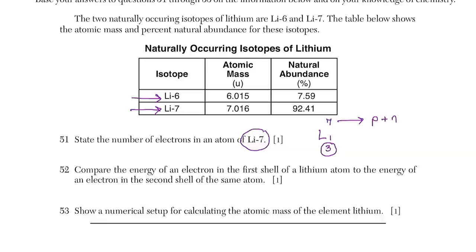To understand how many electrons are in an atom, I say: when I say atom, you say neutral. Atoms don't have a charge, which means the protons — the bottom number, the social security number of the atom — equal positive 3 for lithium. The nucleus has a charge of positive 3 because of the three protons, which means we need an equal number of electrons. Each electron is negative 1, so we need three of them for a total of negative 3.